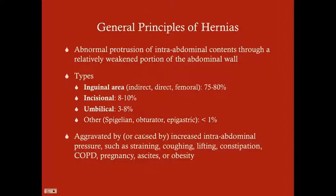Many of these risk factors happen in older age — COPD, ascites, and obesity are more common in older people. Straining from constipation and coughing from COPD are more common in older people. Aging itself is a risk factor for most hernias as well. Lifting applies to older people doing more than they should, but also weightlifting — younger guys at the gym trying to bench press 250 pounds can cause a hernia.